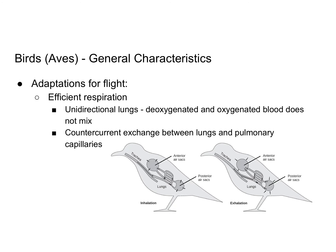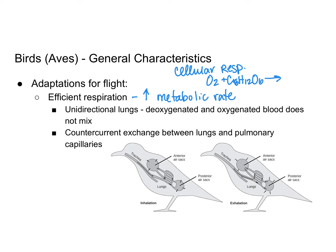Another adaptation that helps birds fly is the ability to have efficient respiration, which goes along with the high metabolic rate. In cellular respiration, organisms make ATP using oxygen along with nutrients such as glucose (C6H12O6), extracting energy to make ATP while also producing carbon dioxide and water. Respiration here refers to the ability to exchange those gases between the organism and the environment.